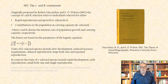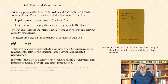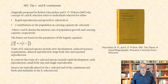In contrast, the traits of R selected species include rapid development, early reproduction, small body size, and single reproduction. Insects are typically placed at the R selected end of the continuum and birds and mammals at the K selected end.